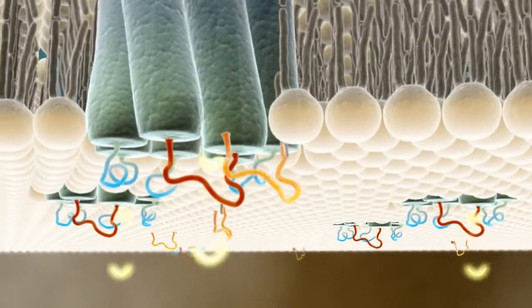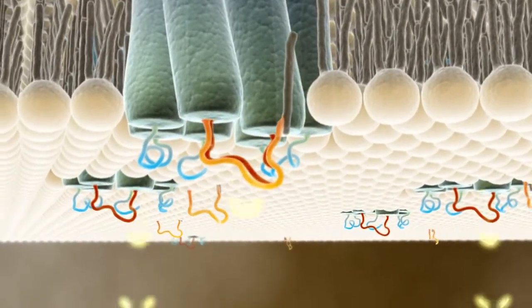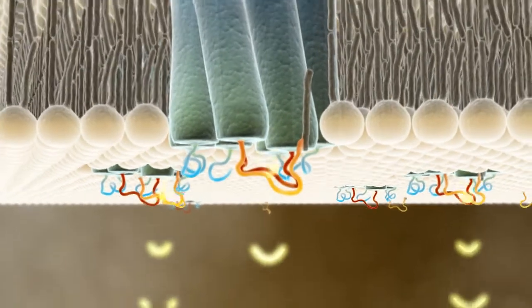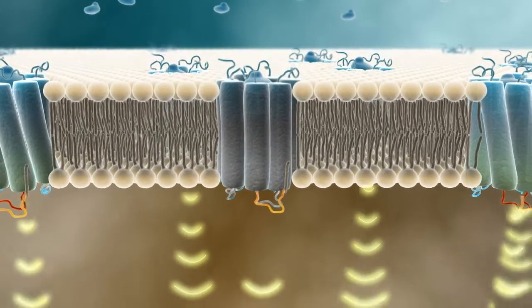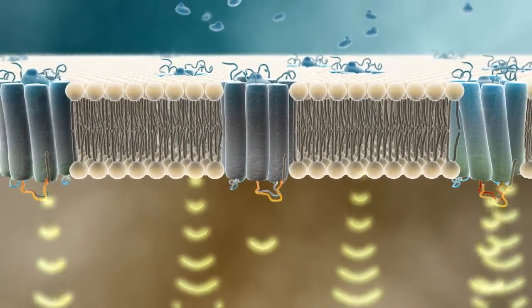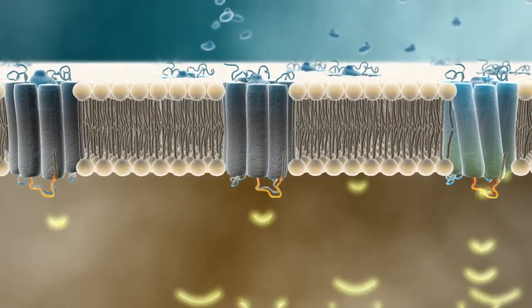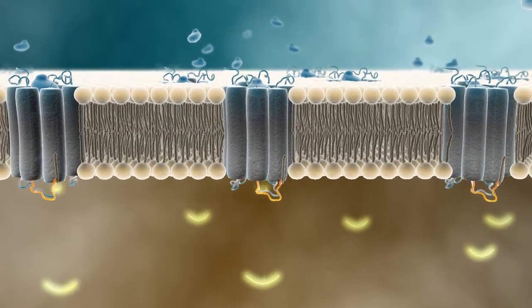The pepducen then encounters and binds to its target GPCR, stabilizing the GPCR in a shape that corrects signaling. This returns the cell to a more normal state, offering the hope of alleviating the overall disease.